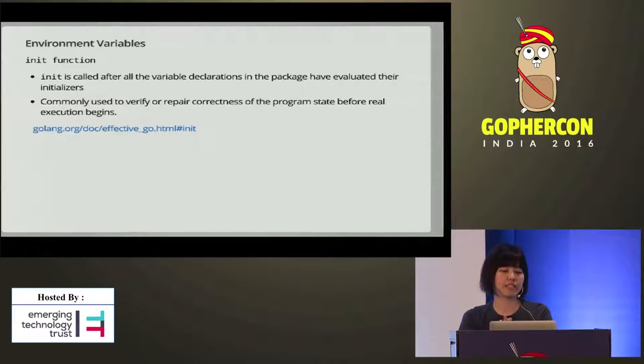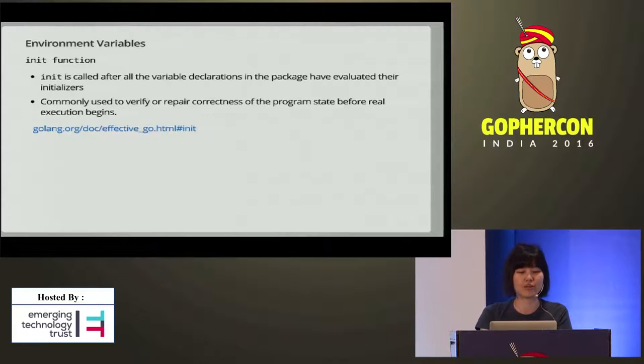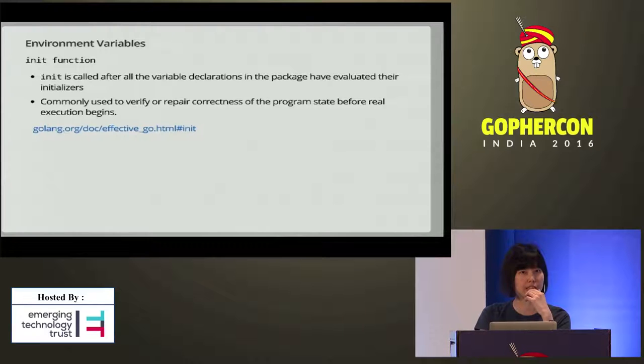A quick note on the init function: in Go, init() is called after all the variable declarations in the package have evaluated their initializers. It's commonly used to verify or repair the correctness of the program state before real execution begins. We use this to check and enforce certain requirements of the environment variables in this package. An example of how this works: you simply import the environment variable package, call the variable, and check that the environment variable is set.